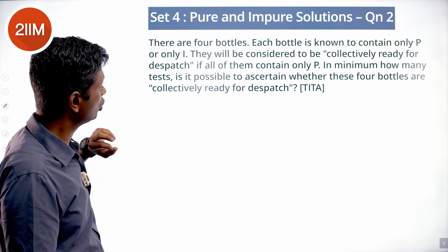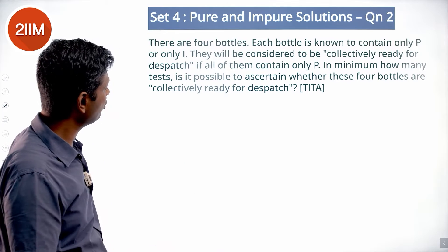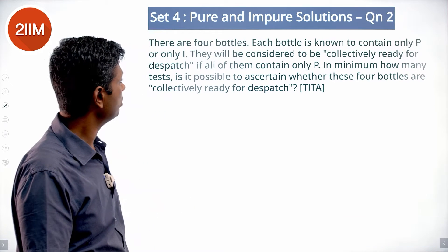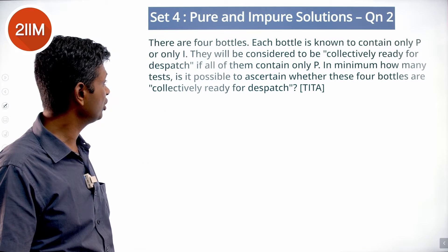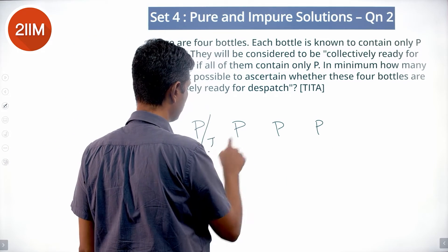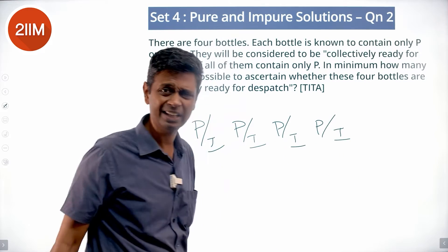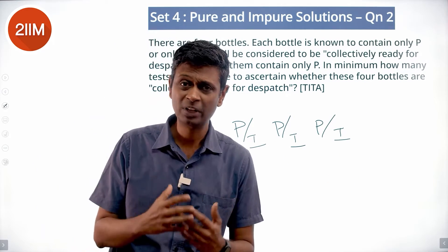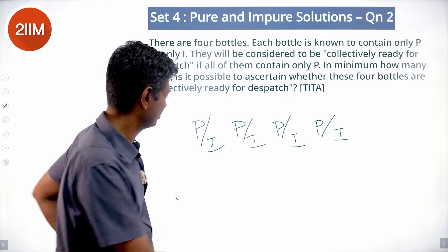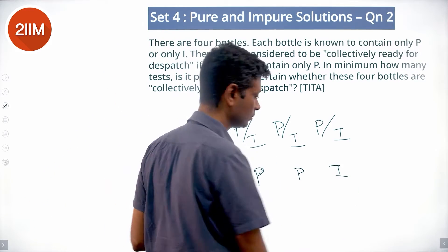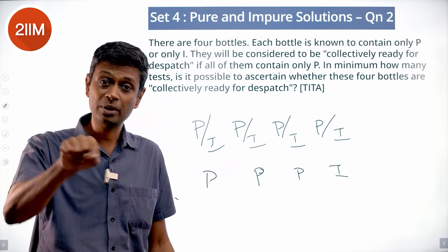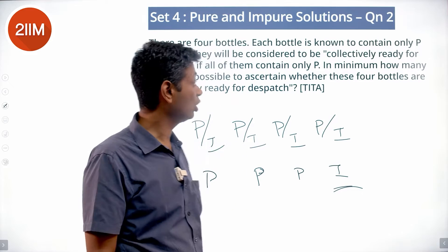There are 4 bottles. Each bottle is known to contain only P or only I. They will be considered collectively ready for dispatch if all of them contain only P. In the minimum number of tests, is it possible to ascertain whether these bottles are collectively ready for dispatch? The possible cases are P P P P, or one of them is I. Since impurity is pure impurity — 100% I — let's assume there's one impure bottle: P P P I.